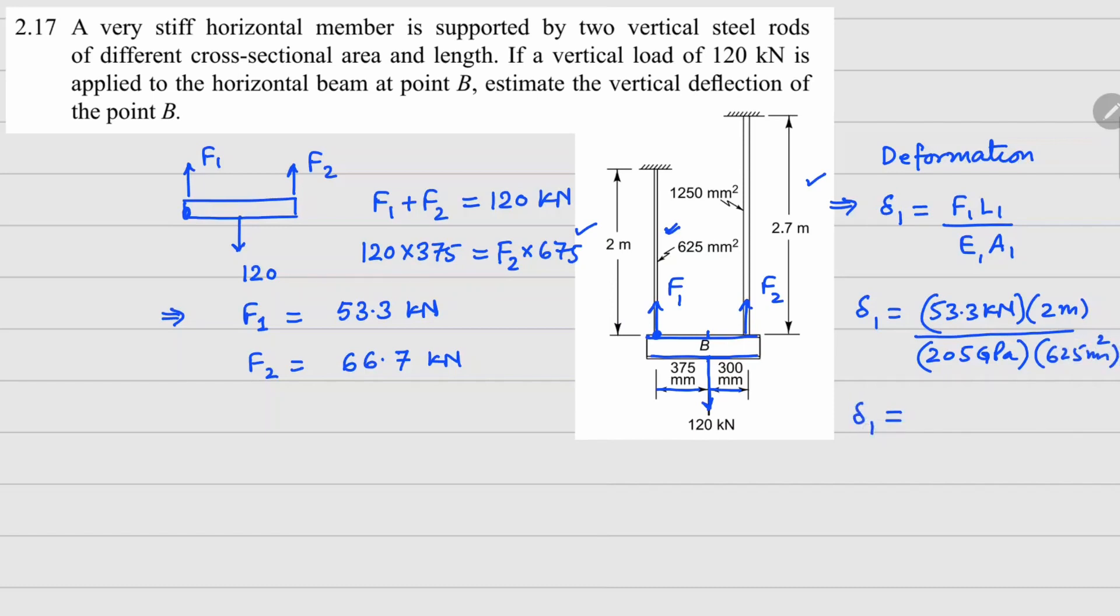If you do the calculation your delta one value is 0.83 millimeters. And similarly we can do delta 2 by changing the value of force to F2, length 2.7, so 66.7 times 2.7 meters divided by 205 gigapascals and cross section area is 1250.